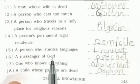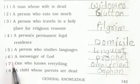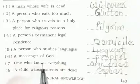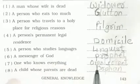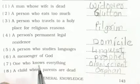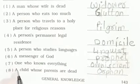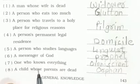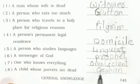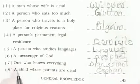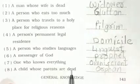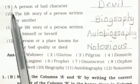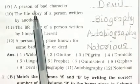Number 7: A person who knows everything — Omniscient. Number 8: A child whose parents are dead — Orphan.